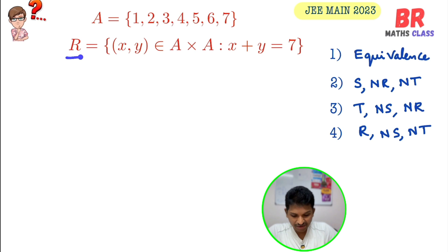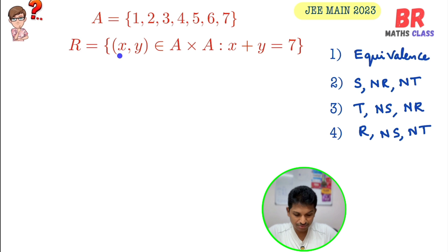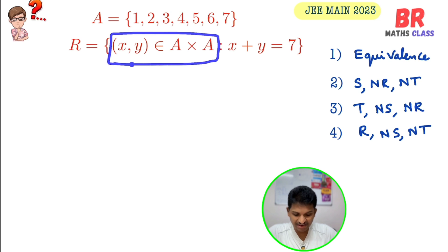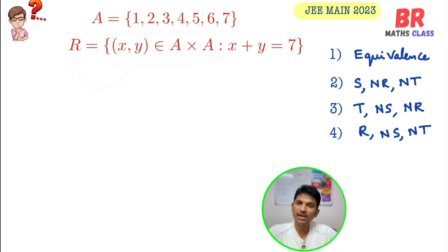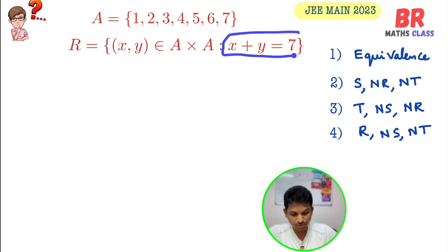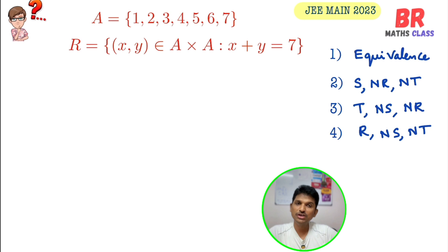They defined R as the set of order pairs (x, y) where (x, y) belongs to A × A, meaning R is a relation on A, and the order pair satisfies the equation x + y = 7. You need to check whether this is an equivalence relation, symmetric not reflexive not transitive, transitive neither symmetric nor reflexive, or reflexive neither symmetric nor transitive.